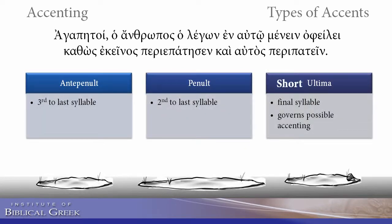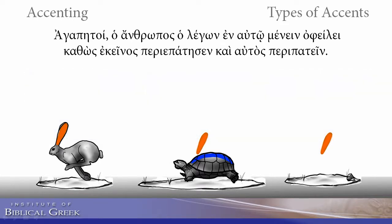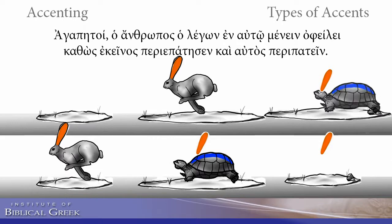We're going to start by assuming that the ultima is short. When it's short, the acute is the most flexible — it can be placed over any of these syllables, and the circumflex is one step behind on the penult. Now, let's see what happens when we lengthen the ultima. Basically, it slows everybody down. The acute may only be placed over the last two syllables, and the circumflex only over the last. These are the only two situations: words with a long ultima, or scenarios with a short ultima.